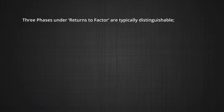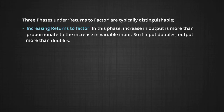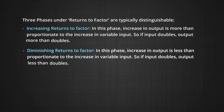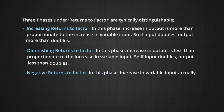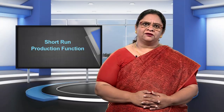How does output change when the variable factor is increased? This depends on returns to factor. Three phases under returns to factor are typically distinguishable. Increasing returns to factor exists when an increase in output is more than proportionate to the increase in input — in other words, if input doubles, output more than doubles. Diminishing returns to factor exists when the increase in output is less than proportionate to the increase in input — if input doubles, output will less than double. Negative returns to factor exist when the increase in input actually causes the output to fall. We shall explain why these returns to factor exist in the next module.